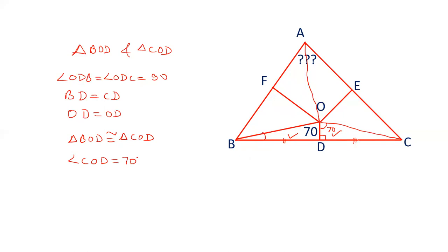And angle OBD and OCD are equal. Let's say these are X each. Similarly, we can prove that triangle AOF and BOF are congruent. And therefore, this angle equals this angle, that is OBF and OAF are equal. Let's say these are Y. And similarly, OEC and OEA are congruent. So, this angle is Z, this angle is also Z. And we have to find out the value of Y plus Z.